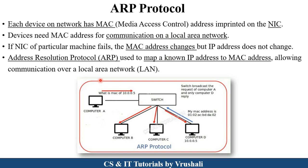Sometimes what happens is: consider computer B, and its NIC or Network Interface Card gets failed. At that time you need to insert a new NIC, so its MAC address is also changed. So this ARP protocol is used to find out the updated MAC address of every PC in the particular network. It maps an IP address according to the MAC address of the particular PC. This MAC address is useful for communication in the local area network.